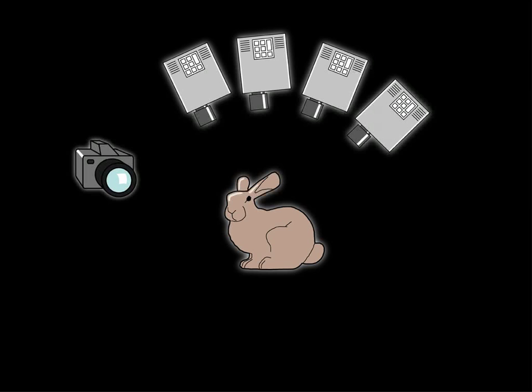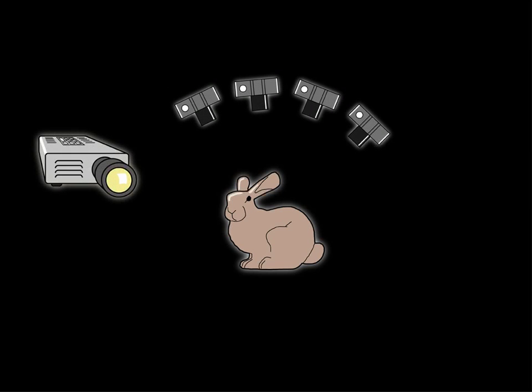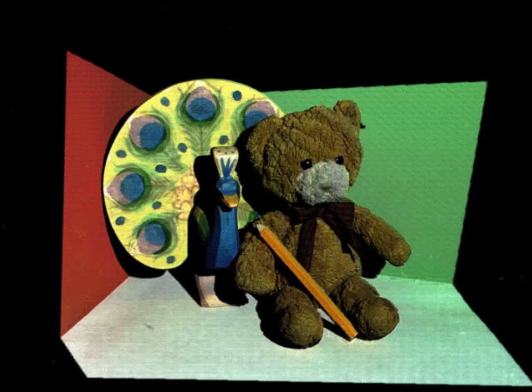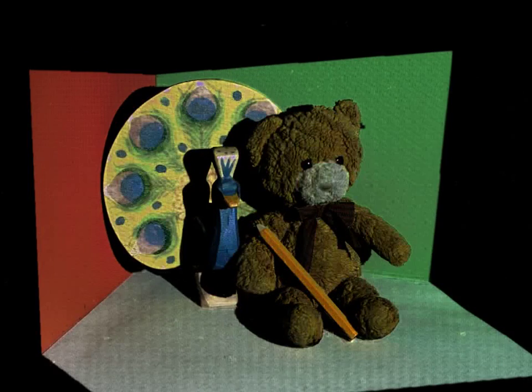Dual photography can accelerate this process tremendously. In our paper, we show that this setup is equivalent to one with a single projector and multiple cameras. Because cameras are passive devices, they can operate in parallel, and thus their transport to the projector can be measured simultaneously. Here we show the dual image of a scene that was acquired using a mirror array to emulate multiple cameras.